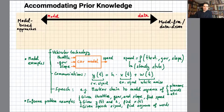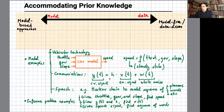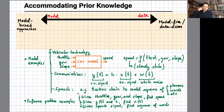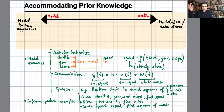The inference problems one can solve in these situations may be, for instance: given the throttle, gear, and slope, predict what will be the speed; or given the received signal and the attenuation, estimate the transmit signal; or given a speech signal — a recorded audio from somebody speaking — estimate what is the sequence of words being pronounced. This is essentially the problem solved by Siri and Cortana.